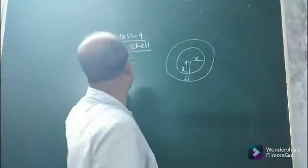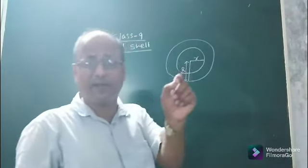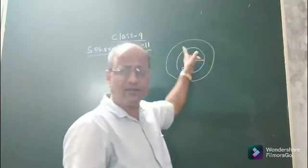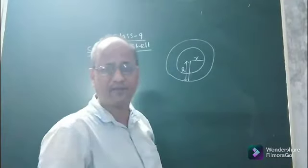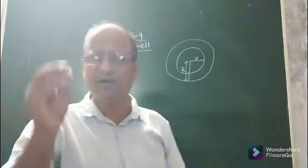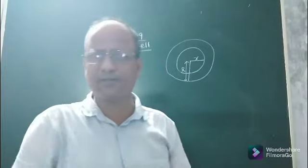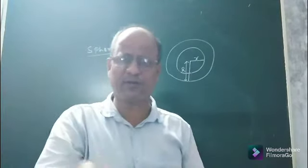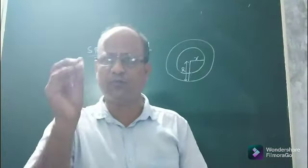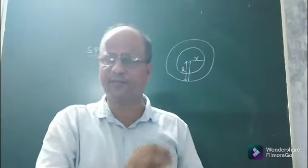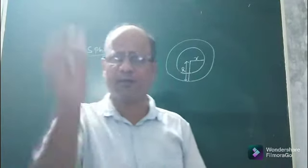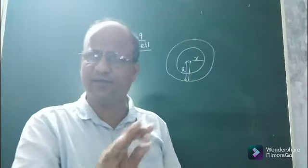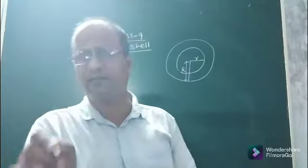We are discussing a spherical shell, which is a part of a sphere. A spherical shell is made up of two concentric solid spheres. Whatever sphere we discussed — a sphere has only one curved surface, and its curved surface area is the same as total surface area, equal to 4πr², where r is the radius of the sphere. A sphere is the set of all points in space equidistant from a fixed point known as the center.